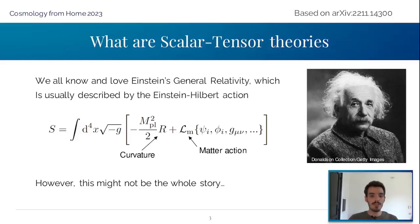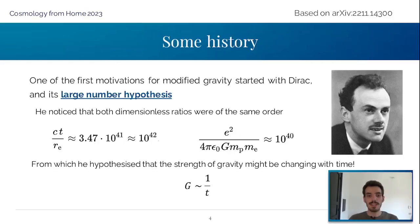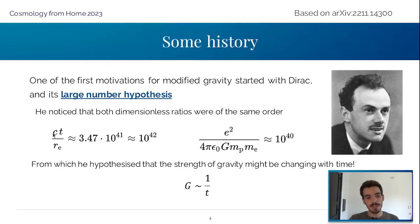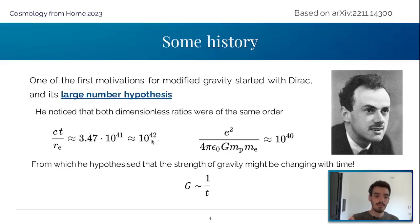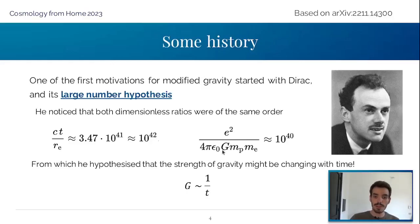In order to understand what scalar tensor theories are, I'm going to use one of the best examples for their uses: the large number hypothesis proposed by Dirac. Dirac noticed that the ratio of the speed of light times t — where t is the age of the universe and r_e is the radius of the electron — had a really big dimensionless number, around 10 to the 42. Similarly, the ratio between the charge squared related to the strength of gravity over the mass of the proton and the mass of the electron was also of that same order.